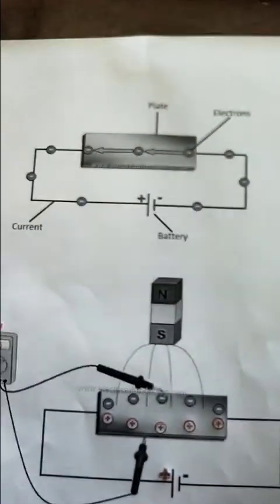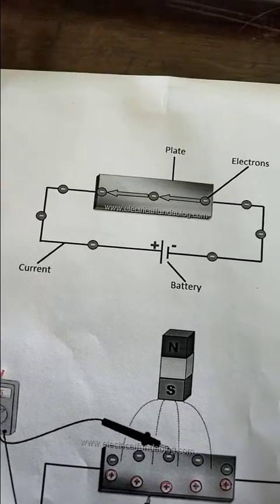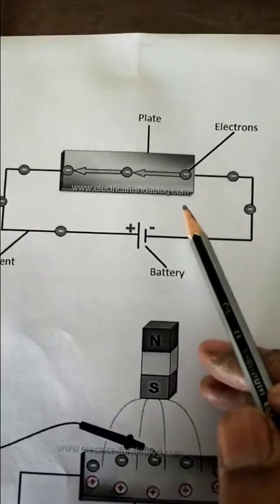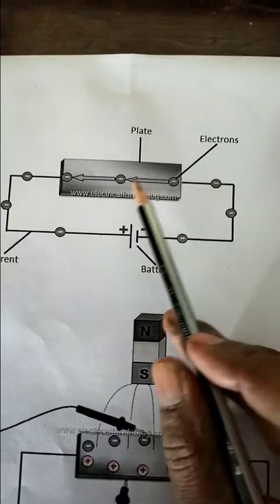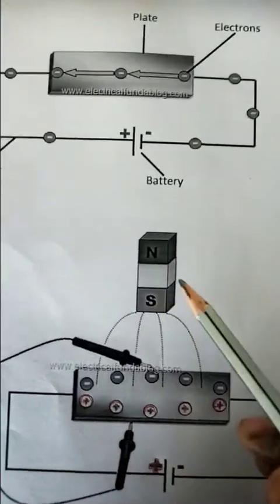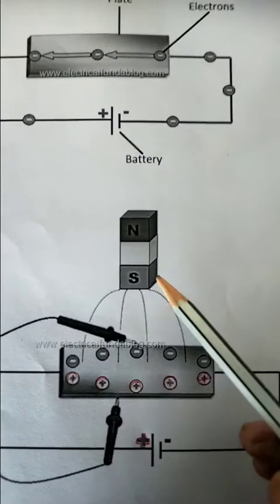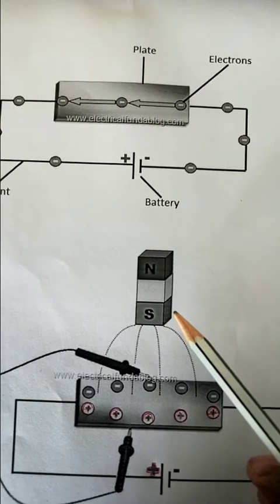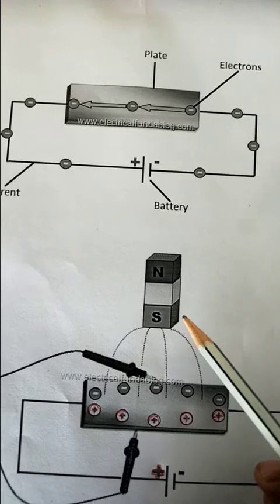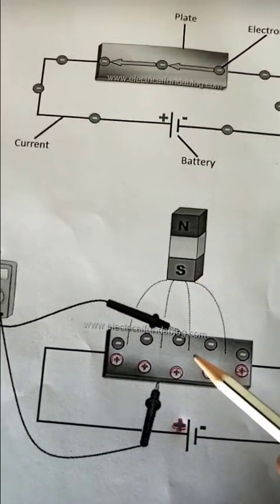I'll explain what the Hall Effect is with a diagram. When a conductor or semiconductor with current flowing in one direction is introduced perpendicular to a magnetic field — current is flowing here from one side to the other — and we apply a perpendicular magnetic field, a voltage can be measured at right angles to the current path.